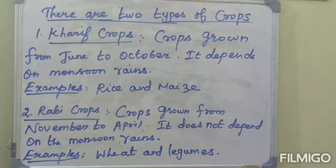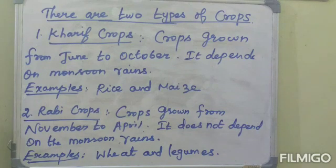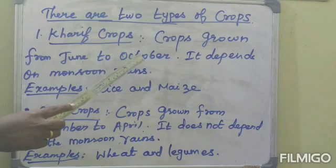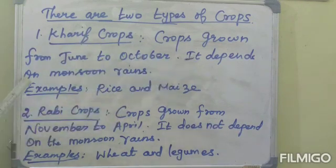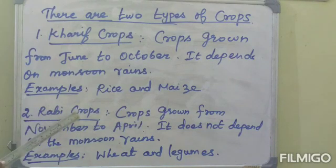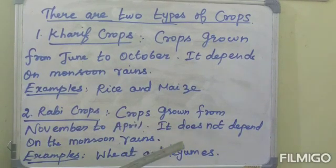Why do farmers grow different crops in different seasons? Because a particular crop may grow well in one season and may not grow as well in another season. There are two types of crops: Kharif crops and Rabi crops. Kharif crops are grown from June to October and depend on monsoon rains. Examples: rice and maize. Rabi crops are grown from November to April and do not depend on monsoon rains. Examples: wheat and legumes. Thank you.